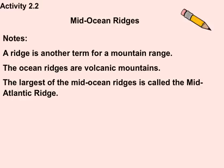A ridge is another term for a mountain range, so the Mid-Atlantic Ridge is really the Mid-Atlantic mountain range. Ocean ridges are typically volcanic mountains, and we'll get into how these mountains form later in the book. The largest of the mid-ocean ridges is called the Mid-Atlantic Ridge, and you can see it running right down the middle of the Atlantic Ocean in the picture.